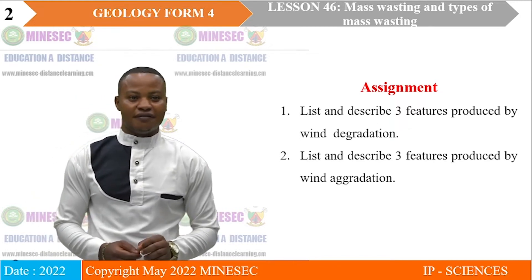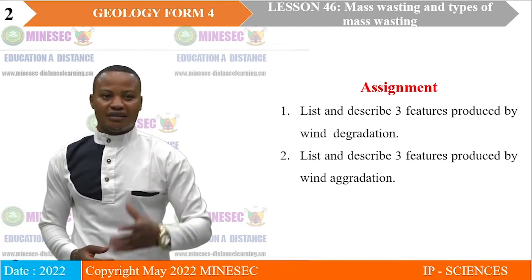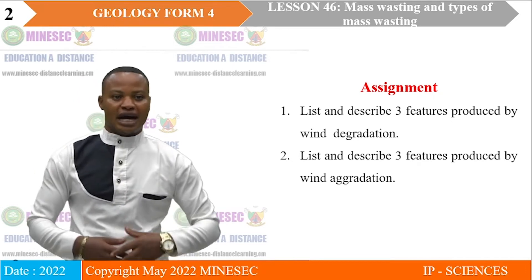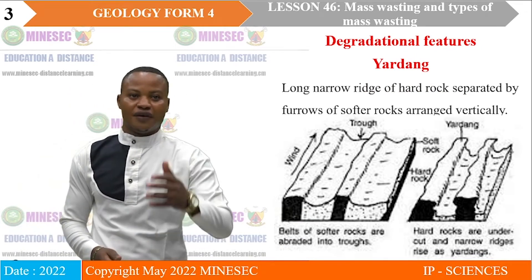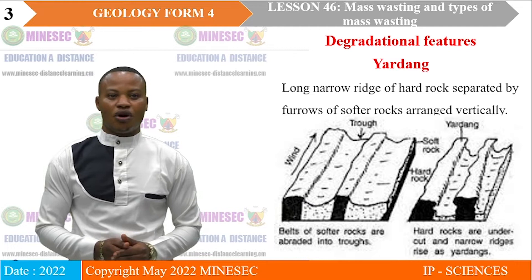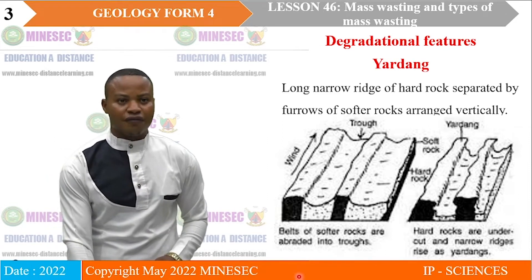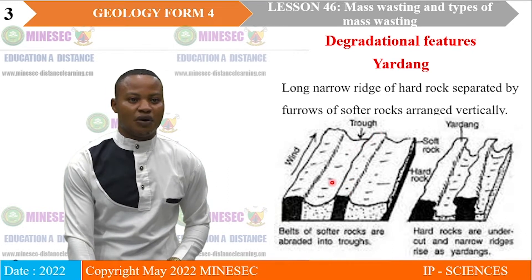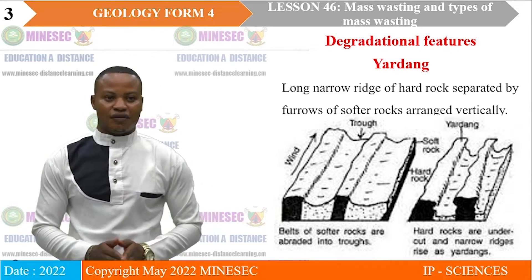The key terms here are wind degradation and wind aggradation. Wind degradation stands for erosional features produced by wind, whereas wind aggradation means features produced by wind deposition. The first feature produced by wind degradation is yardangs. Yardangs are long, narrow ridges of hard rocks separated by furrows of softer rocks, where wind erosion exploits the softer rocks faster than the harder ones, leaving the harder ones standing as ridges. In yardangs, the hard and soft layers of rocks are arranged vertically.